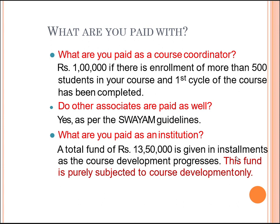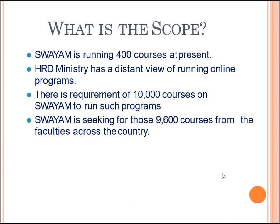What are developers paid when developing e-content? As a course coordinator, you are paid rupees 1 lakh if there is an enrollment of more than 500 students in your course and the first cycle of the course has been completed. Other associates are also paid as per SWAYAM guidelines. As an institution, a total fund of rupees 13 lakhs 50 thousand is given in installments as the course development progresses. This fund is purely for course development only.